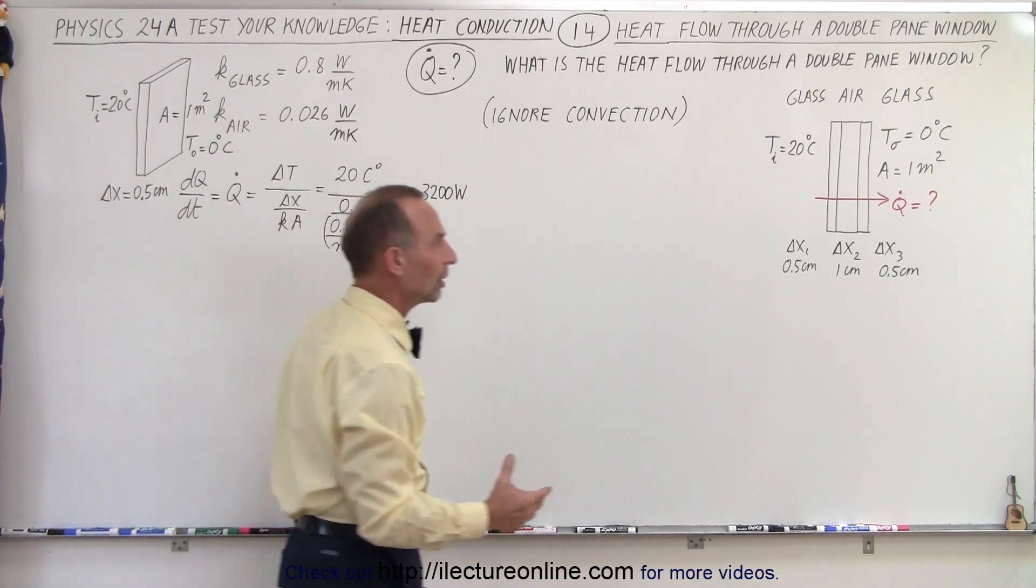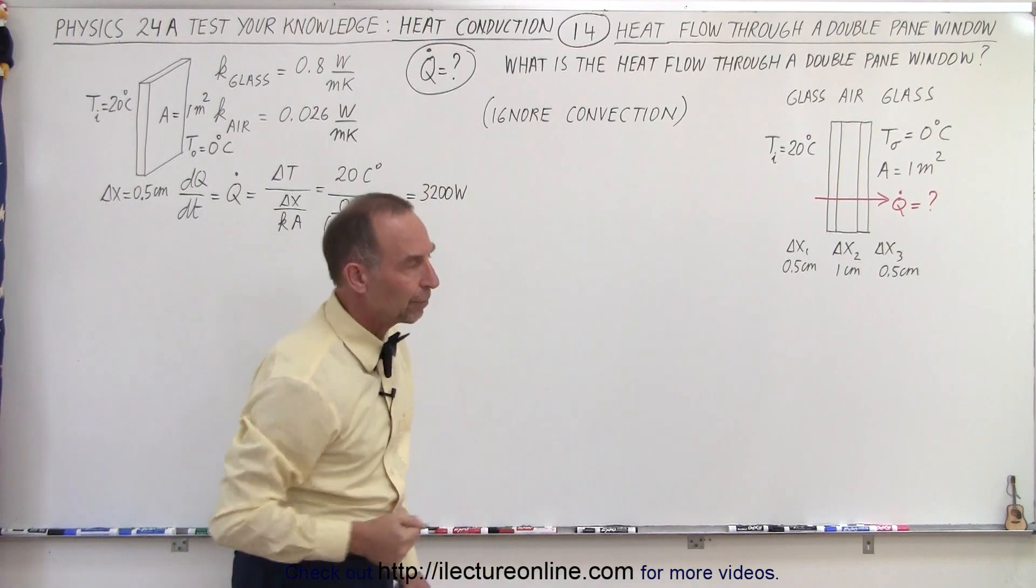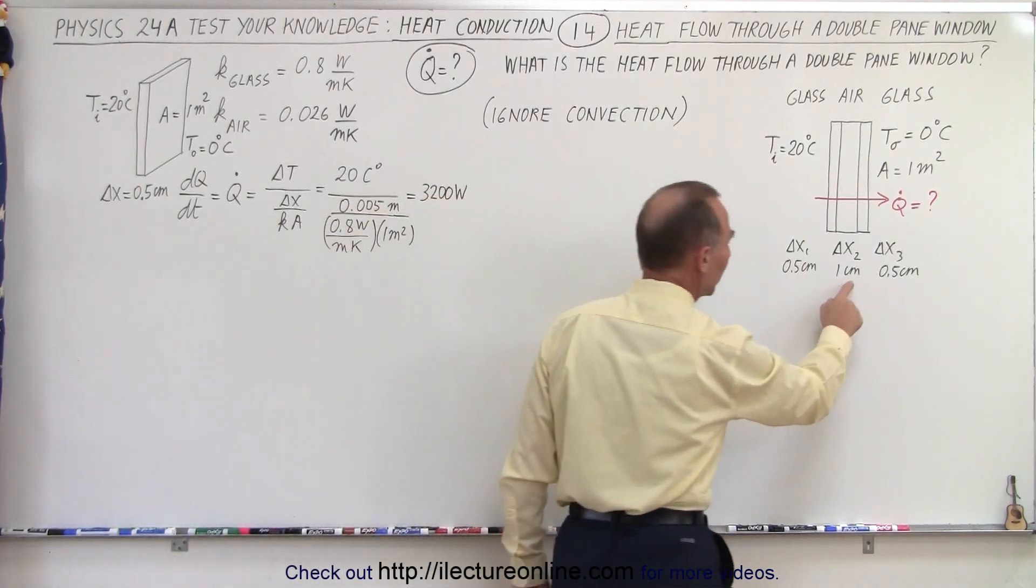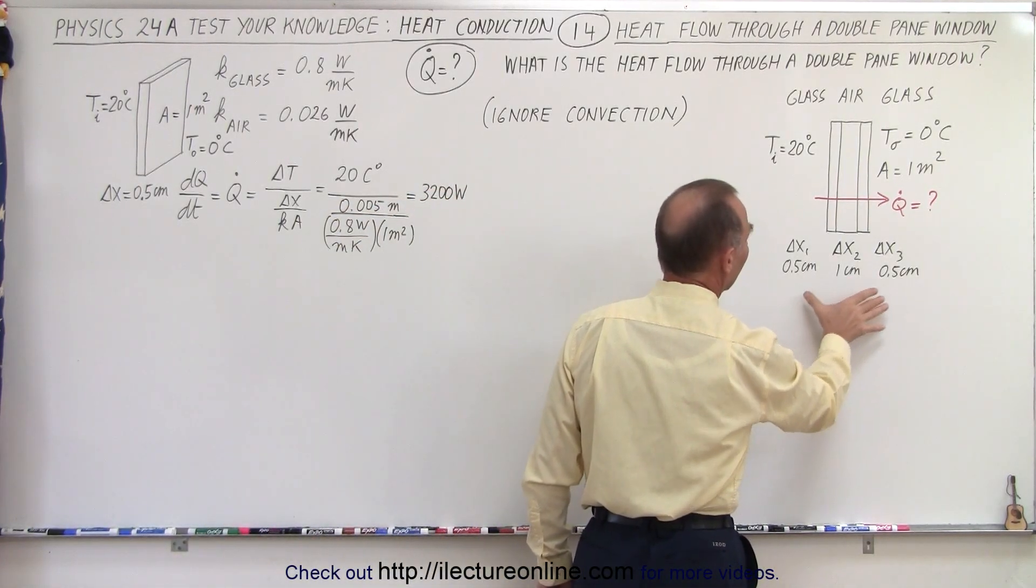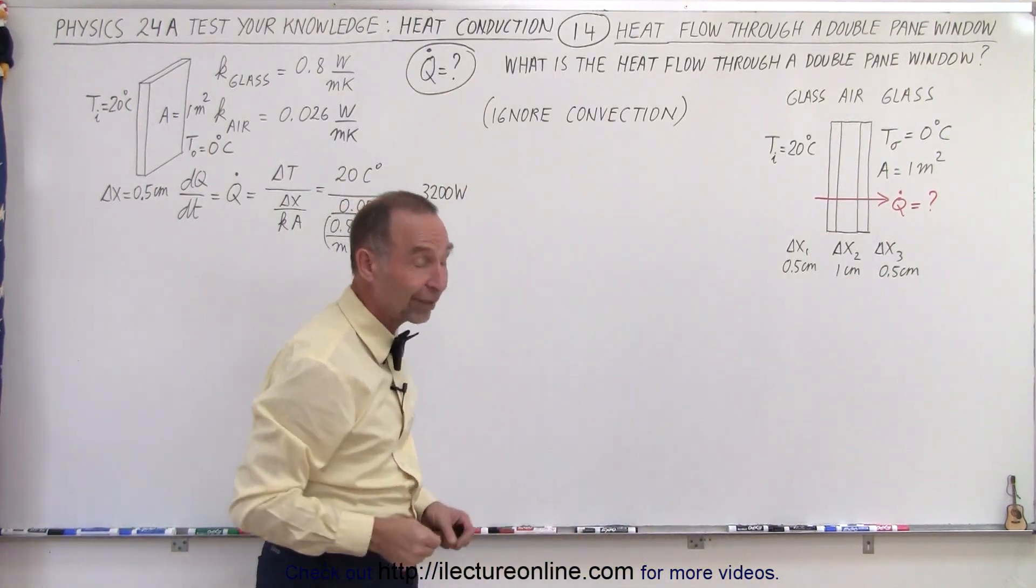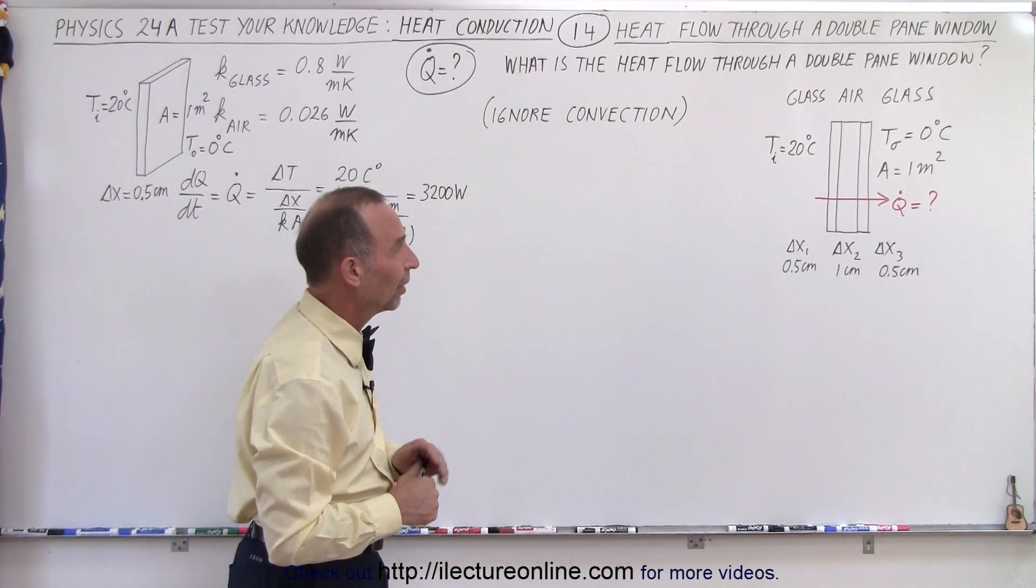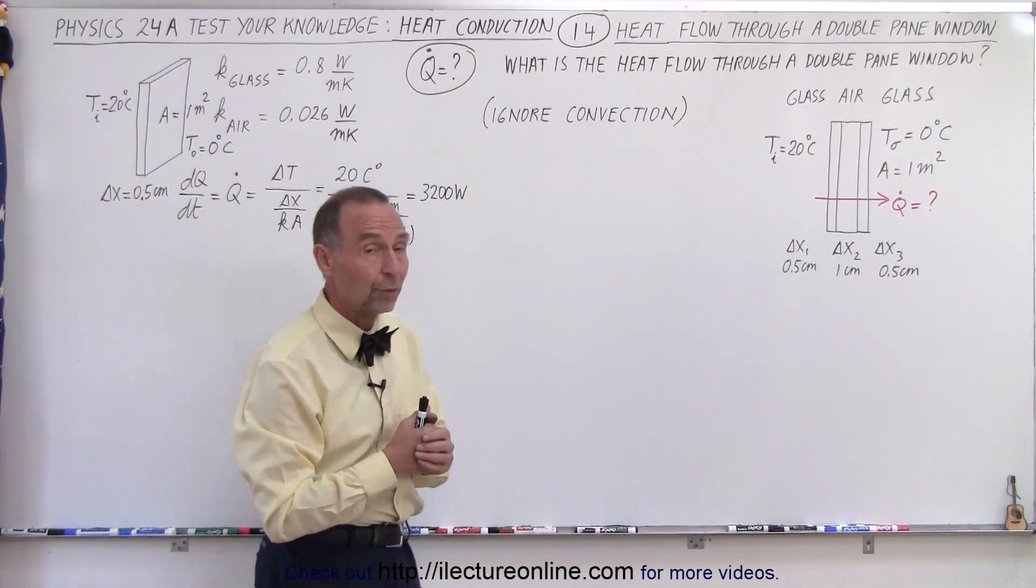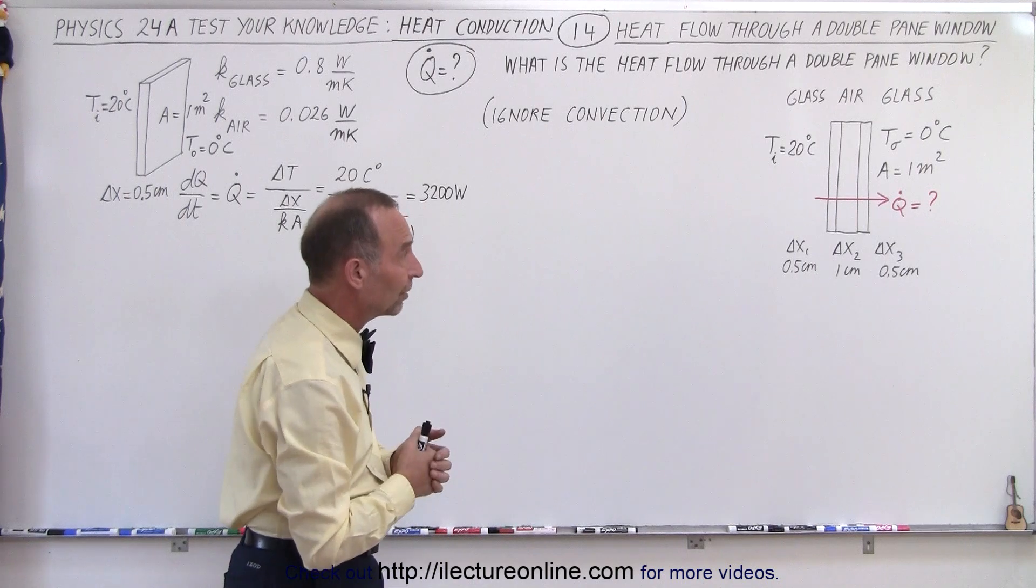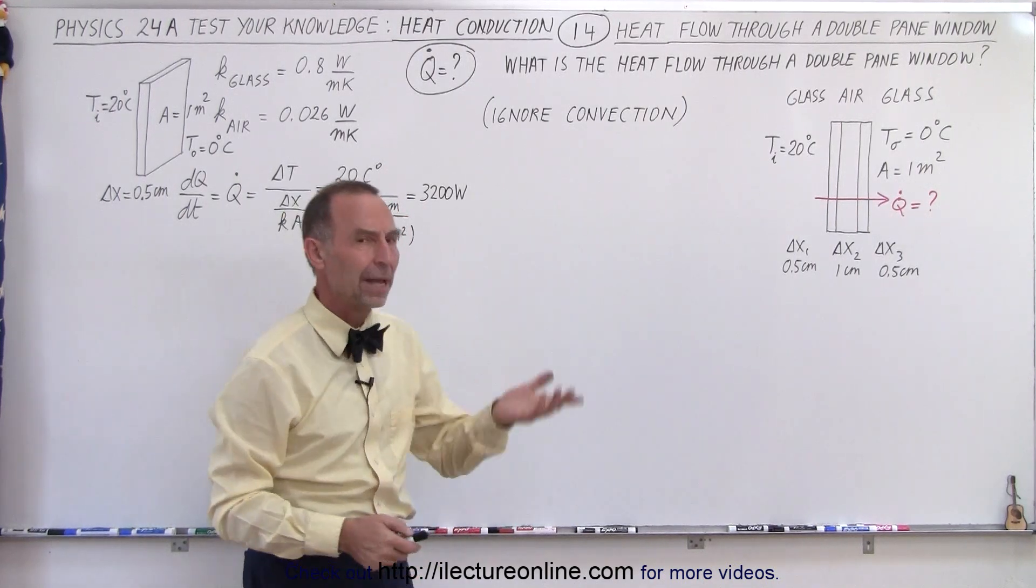So for comparison, we're going to calculate the heat flow across a double pane window, with air in between. Notice the air layer in between is one centimeter across. And the glass panes, the sections of glass, the window panes are 0.5 centimeters wide. Again, the difference in temperature is 20 degrees. And notice that the window area, the cross-sectional area is also one square meter. So let's compare the two.